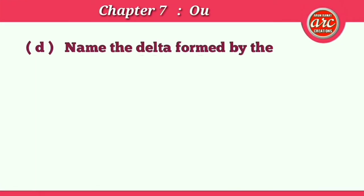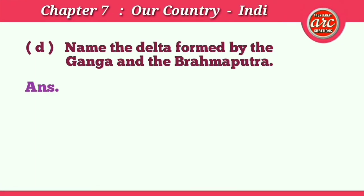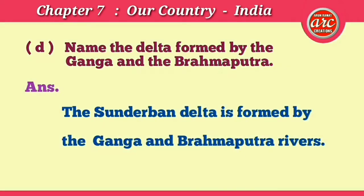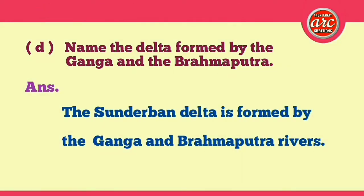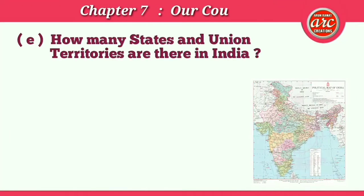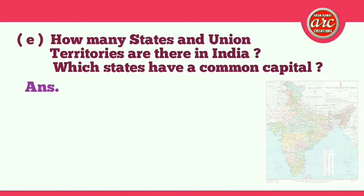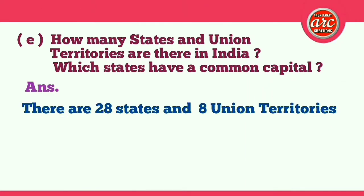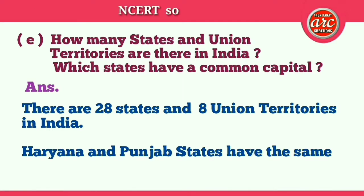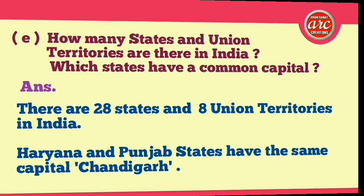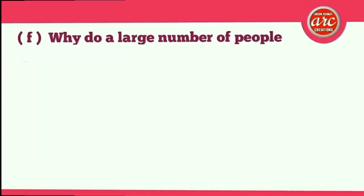(d) Name the delta formed by the Ganga and the Brahmaputra. Answer: The Sundarban Delta is formed by the Ganga and Brahmaputra rivers. (e) How many states and Union territories are there in India, and which states have a common capital? Answer: There are 28 states and 8 Union territories in India. Haryana and Punjab share the same capital, Chandigarh.